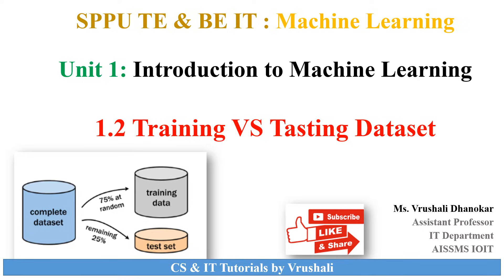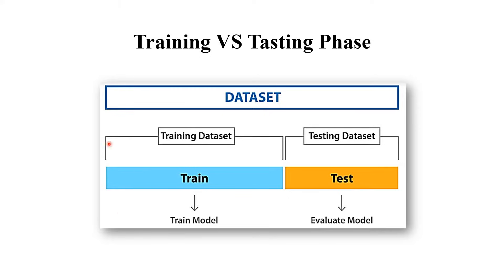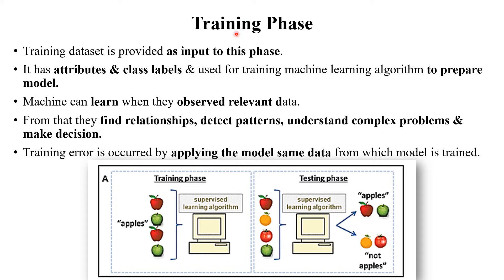Here is a diagrammatical representation of the training and testing phases. Suppose this is your complete dataset — a dataset means a collection of data, for example a student dataset which includes roll number, name, academic subjects, and percentage marks. That dataset can be divided into two parts: one is the training dataset and another is the testing dataset. The training dataset is used for training purpose and is called the train model, while the testing dataset is used for testing purpose and is called the evaluate model.